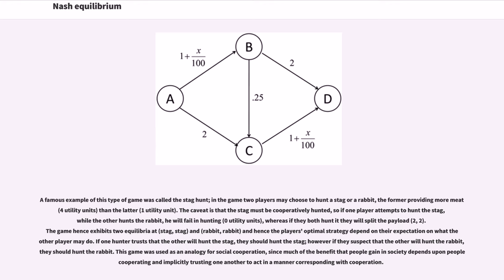A famous example of this type of game is called the stag hunt. In the game, two players may choose to hunt a stag or rabbit, the former providing more meat than the latter. The caveat is that the stag must be cooperatively hunted, so if one player attempts to hunt the stag while the other hunts the rabbit, he will fail, whereas if they both hunt it they will split the payload. The game hence exhibits two equilibria, and the player's optimal strategy depends on their expectation of what the other player may do. If one hunter trusts that the other will hunt the stag, they should hunt the stag; however if they suspect that the other will hunt the rabbit, they should hunt the rabbit. This game was used as an analogy for social cooperation, since much of the benefit that people gain in society depends upon people cooperating and implicitly trusting one another to act in a manner corresponding with cooperation.